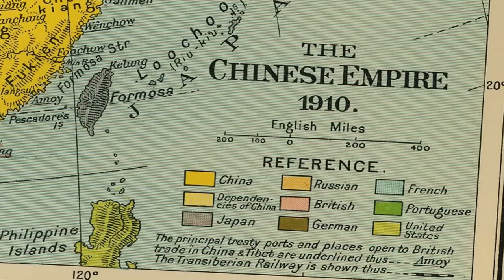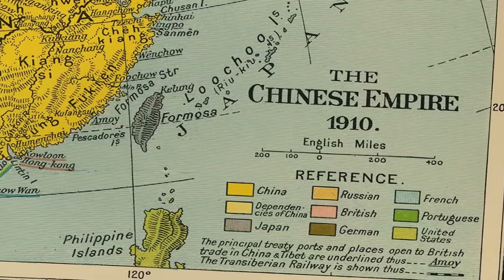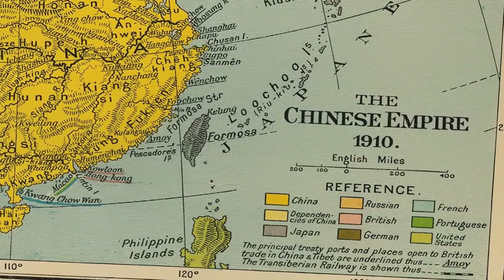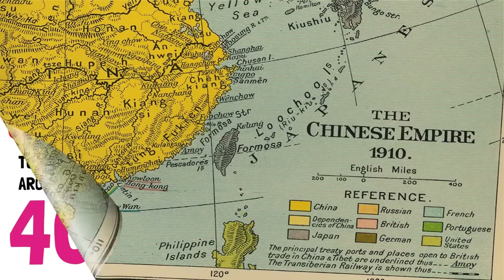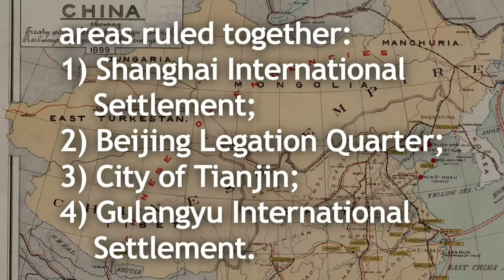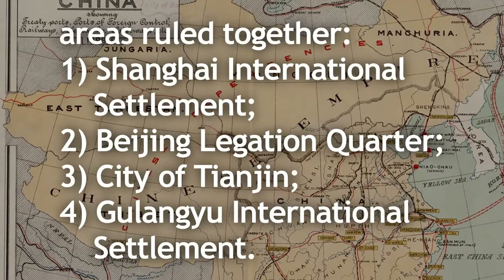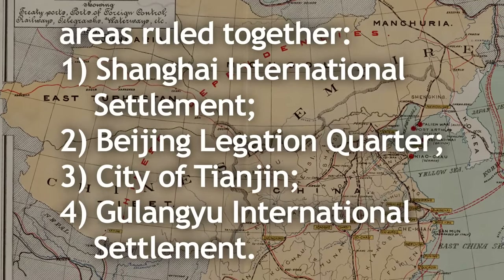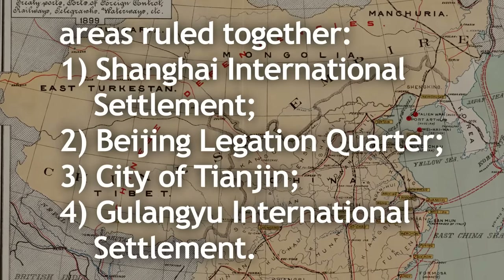American concessions were limited to the international settlements in Tianjin and Shanghai. Italy, Belgium, and Austria-Hungary were limited to Tianjin as well, and the Portuguese to Macau. Speaking of Tianjin and Shanghai, there were also areas which these nations ruled together: specifically the Shanghai International Settlement, the Beijing Legation Quarter, the city of Tianjin, and the Gulangyu International Settlement.